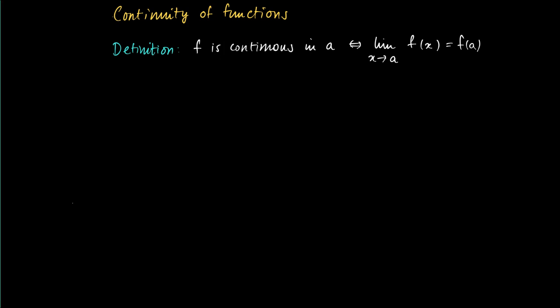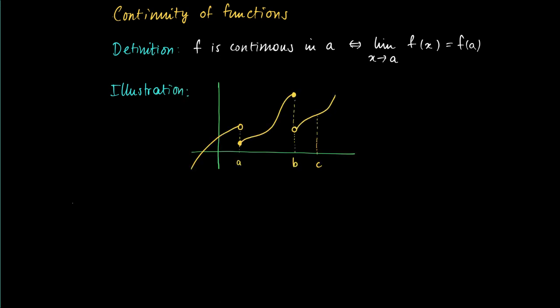As an illustration, look at the following picture. We have a function f with a couple of jumps — in a we see a jump and in b we see a jump — in which case we would not like to call f continuous. This is the graph. But we see that f is continuous at c.